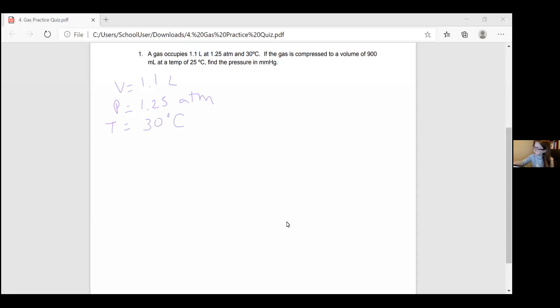If the gas is compressed to a volume of 900, so now we have another volume, and it's 900 milliliters. At a temperature of 25 degrees Celsius, find the pressure. And they want the pressure in millimeters of mercury.